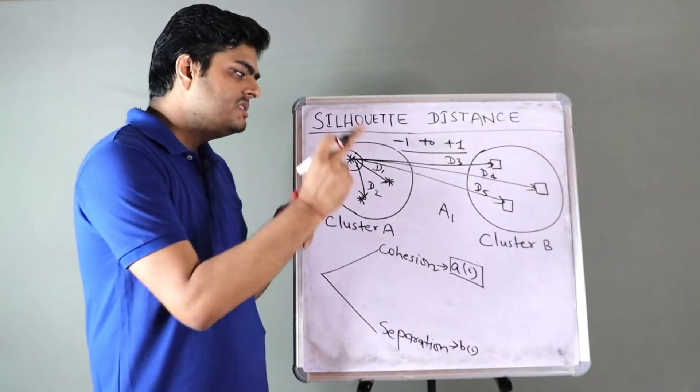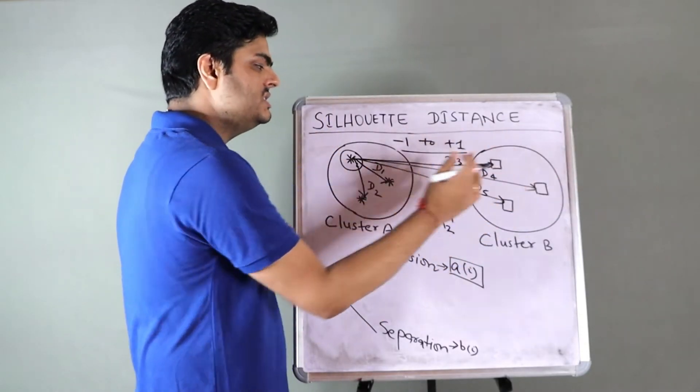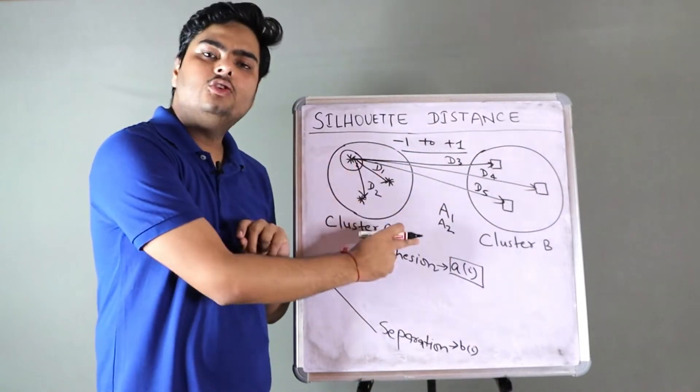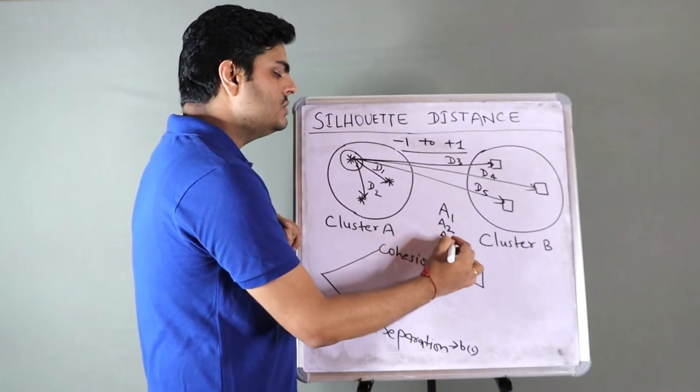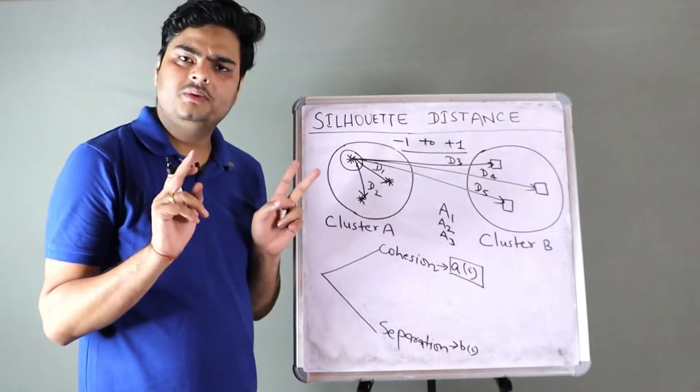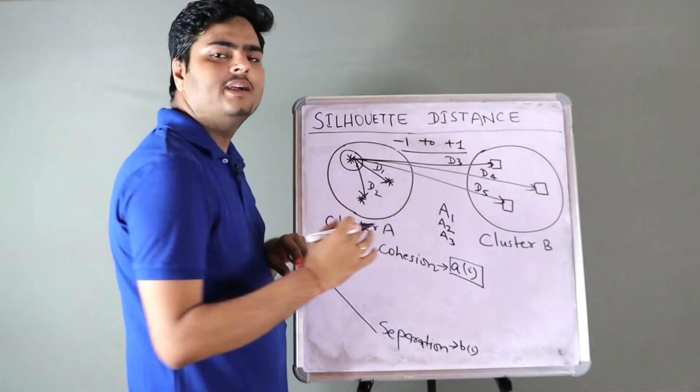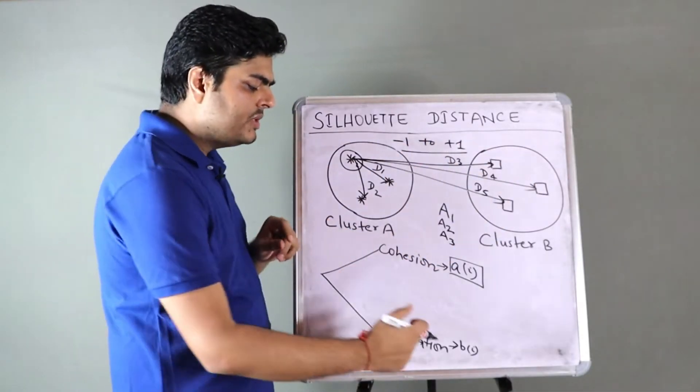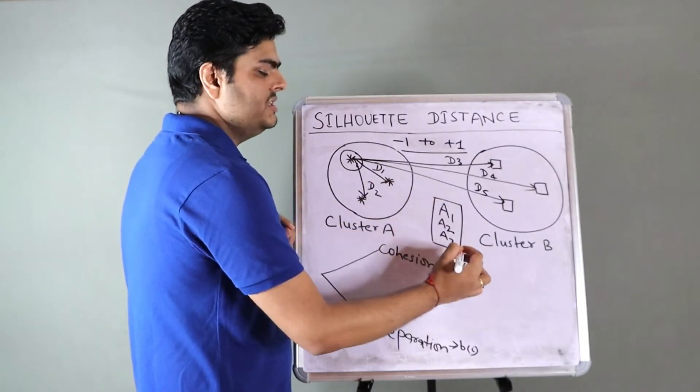And to measure separation, we have something known as B. So B for a data point I, in our case, the same data point. What is B? B is nothing but you take distance of this point from all these points: 1, 2, and 3. How many distances we have now? Three.